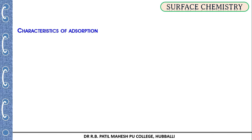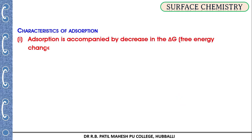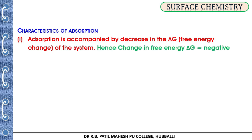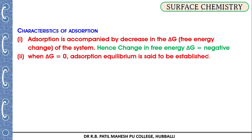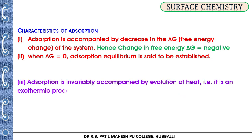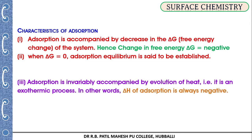Now let us see the characteristics of adsorption. Adsorption is always accompanied by a decrease in the free energy (ΔG) of the system, so the change in free energy during adsorption is always negative. When ΔG becomes equal to zero, adsorption reaches equilibrium. During adsorption, heat is also liberated, which indicates that adsorption is an exothermic process — in exothermic processes, ΔH (change in enthalpy) is negative.